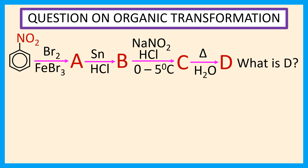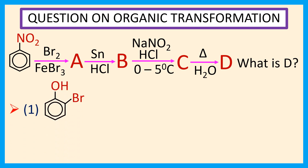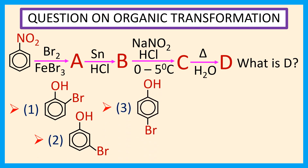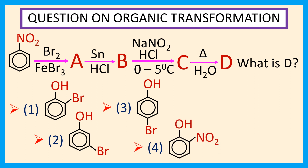So, what is compound D? The choices are: 1) orthobromophenol, 2) metabromophenol, 3) parabromophenol, 4) orthonitrophenol.